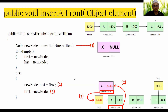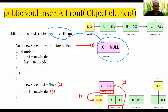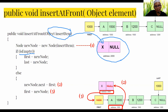The new node stores the data x. Then it checks whether the list is empty. If the list is empty, we simply assign the new node to first and to last. Otherwise, if the list is not empty — for example, our list consists of three nodes A, B, C — we proceed differently.